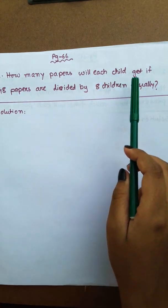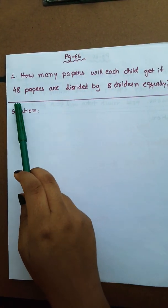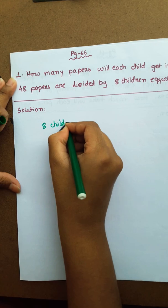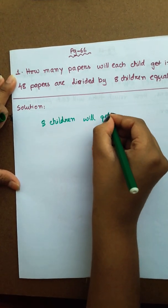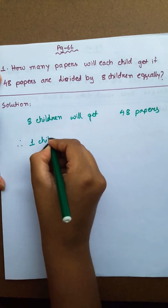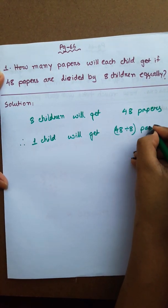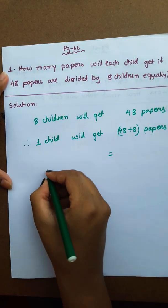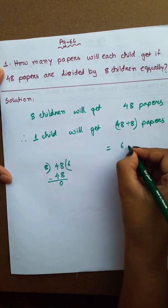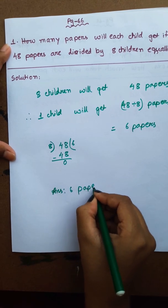How many papers will each child get if 48 papers are divided by eight children equally? Eight children will get 48 papers. Therefore, one child will get 48 divided by eight papers. We know six eights are forty-eight. Therefore, 6 papers. So answer is 6 papers.